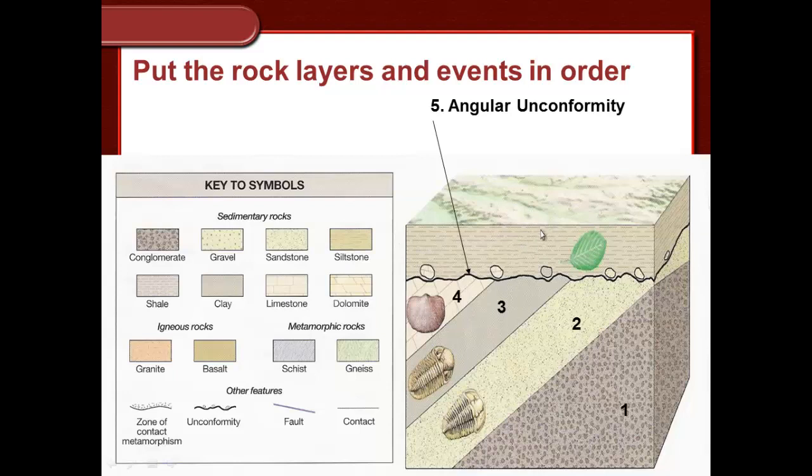So not only should you have identified that and put it in this order, but we also need to know what causes these. Why is there this angular unconformity? What does that tell us was happening while this event was going on? Angular unconformities are caused by uplift and erosion.